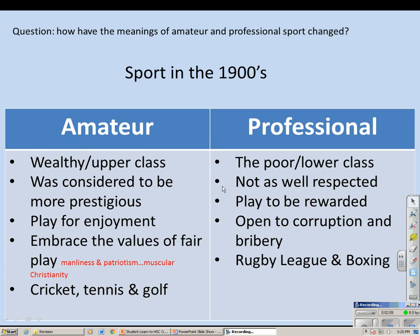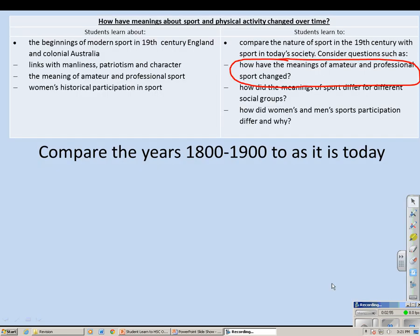What did it mean to be an amateur sportsman in the 1900s? Well, you were fairly much from the wealthy upper class. It was very difficult for the poor or lower class to be an amateur sportsman because they couldn't afford to train or give up their income. Amateur sports people were considered to be far more prestigious. They received all the media attention, played for enjoyment only, and were considered to embrace the values of fair play. This links to manliness and character — specifically the concept of muscular Christianity, meaning you played sport with fair play and values in mind.